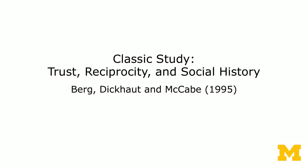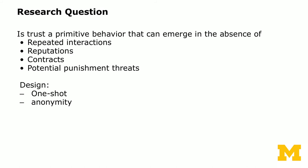That leads to the Berg, DeKalb, and McCabe paper on trust, reciprocity, and social history. I'm going to go through the main results of this paper — it's primarily on the design. The question is whether trust is a primitive behavior that can emerge in the absence of repeated interactions, reputations, contracts, and potential punishment threats. To answer this, they designed an experiment where subjects are anonymous and engage in a trust game which happens only once — a one-shot game.